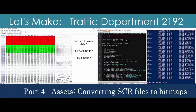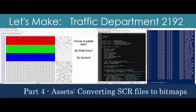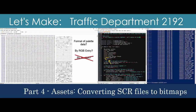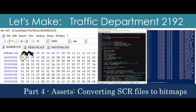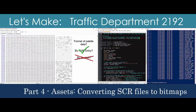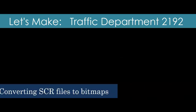This time, we'll take our first steps towards making Traffic Department. We'll transform the original game SCR files into bitmap graphics by making a small C program using an SDL data structure. Before we do that, we'll dive into a few SCR files to understand how the data is stored and discover the transformation steps. After we've converted the 44 SCR files, I'll do a quick code review to point out several important problems with the C program, despite its success.